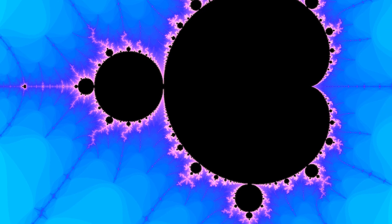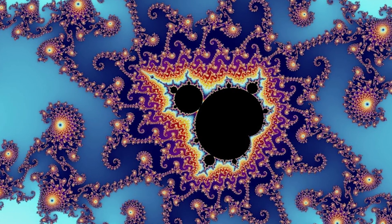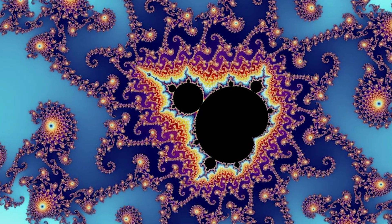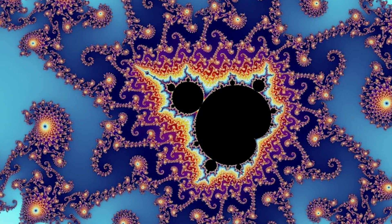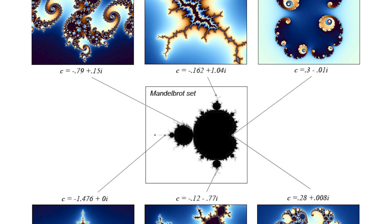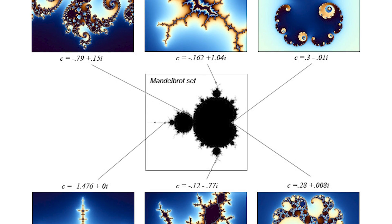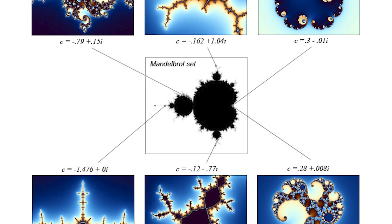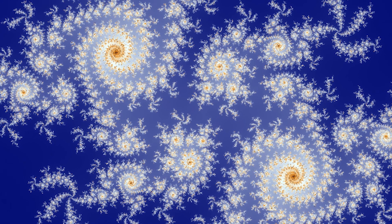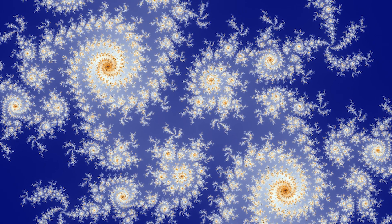The Mandelbrot set is often visualized as a picture in the complex plane, where the horizontal axis represents the real part of c and the vertical axis represents the imaginary part of c. Points belonging to the set are colored black, while points that do not belong are colored based on how quickly the sequence diverges. One of the most interesting properties is its correspondence with the Julia sets: for every point c in the Mandelbrot set, there is a corresponding Julia set connected to the main cardioid. The Julia sets are also fractals, generated by the iteration of a related complex function.